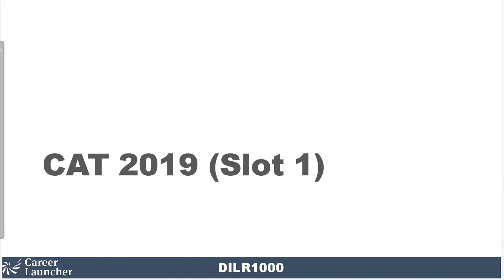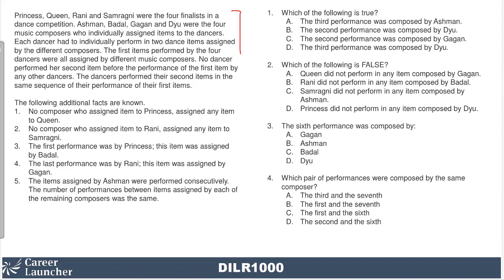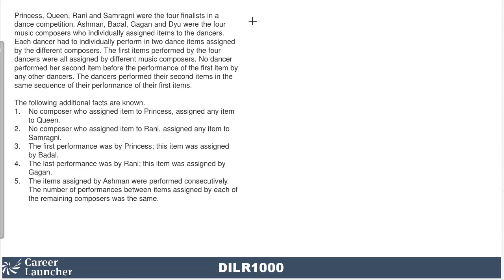This particular set is from CAT 2019 slot number one. The setup is clean — you have the setup and some rules. When you look at the questions, you see six performances with no 'cannot be determined' type answers. So in all probability we can crack this set completely and answer all four questions together — that is 12 marks. So we have dancers P, Q, R, S and composers A, B, G, D.